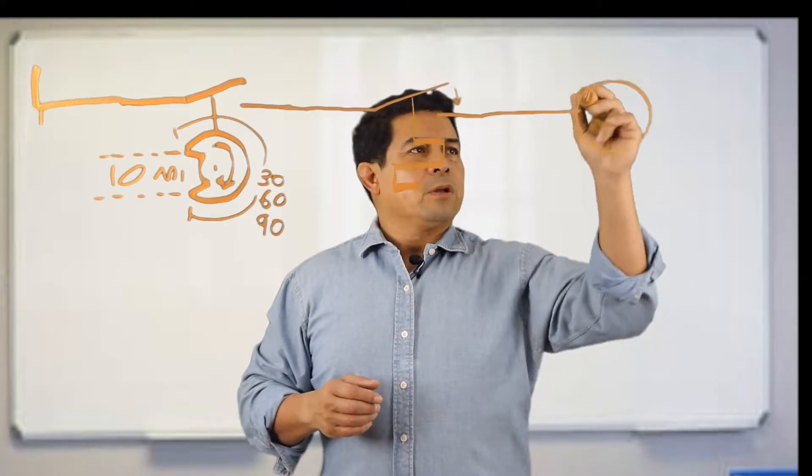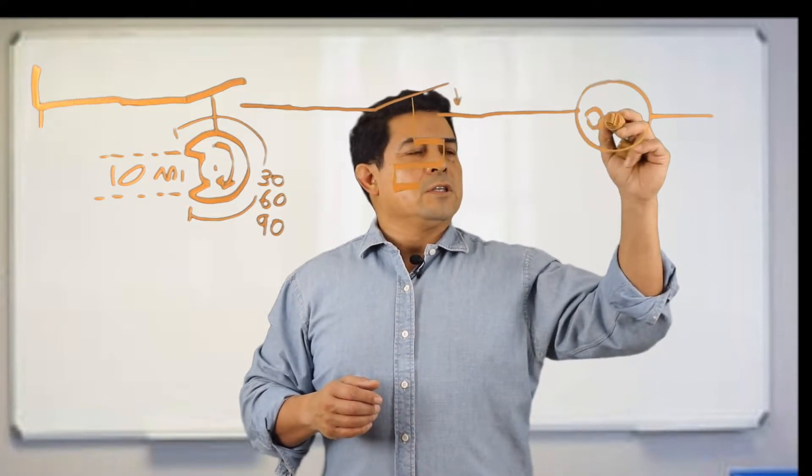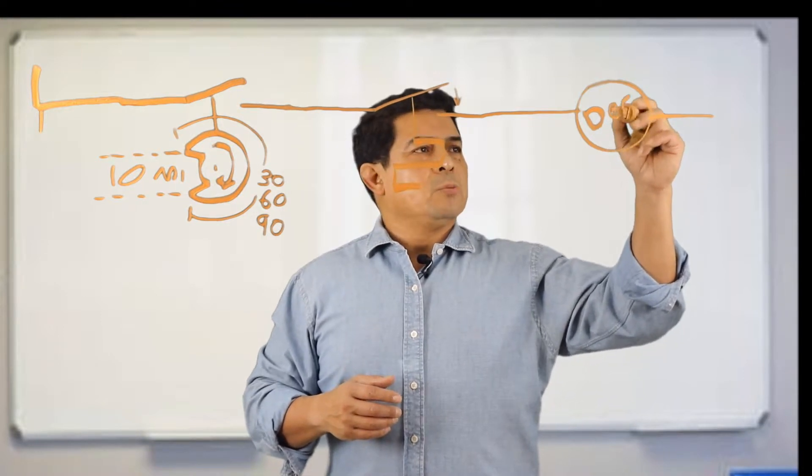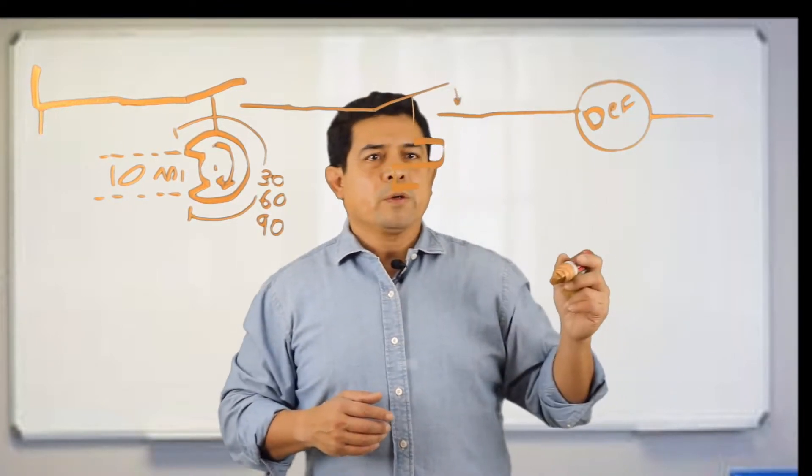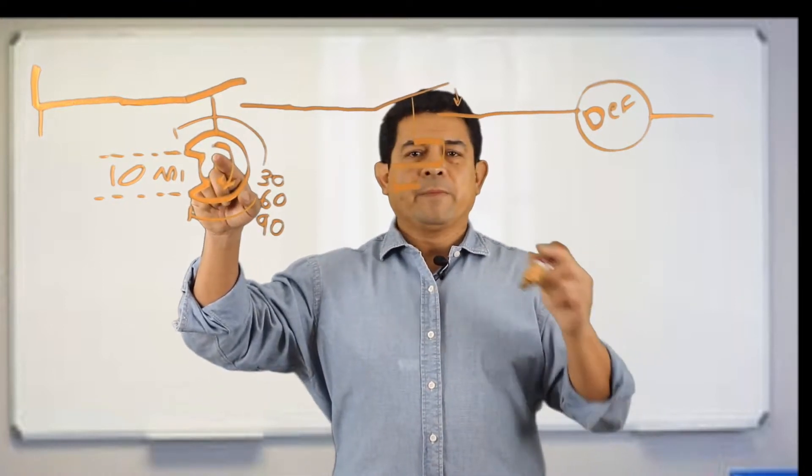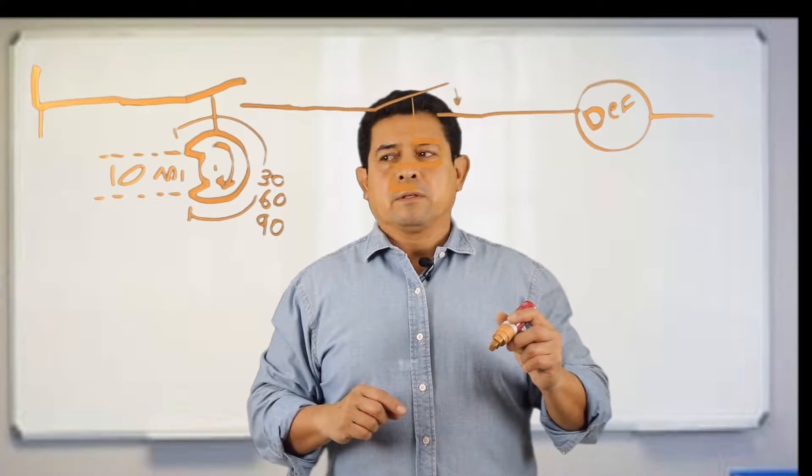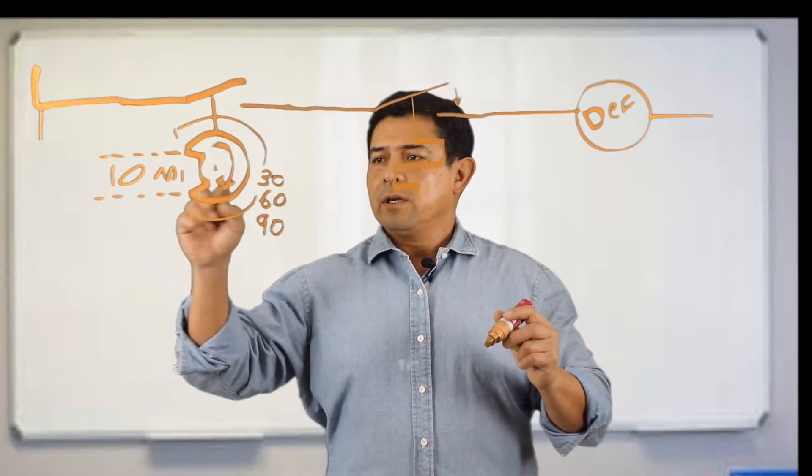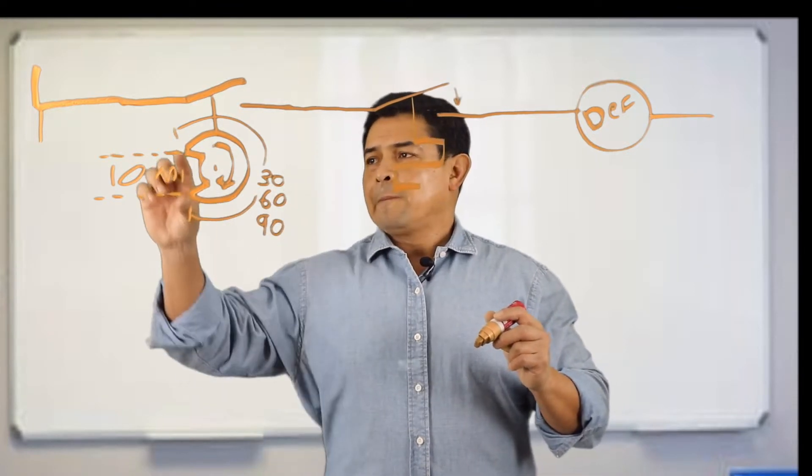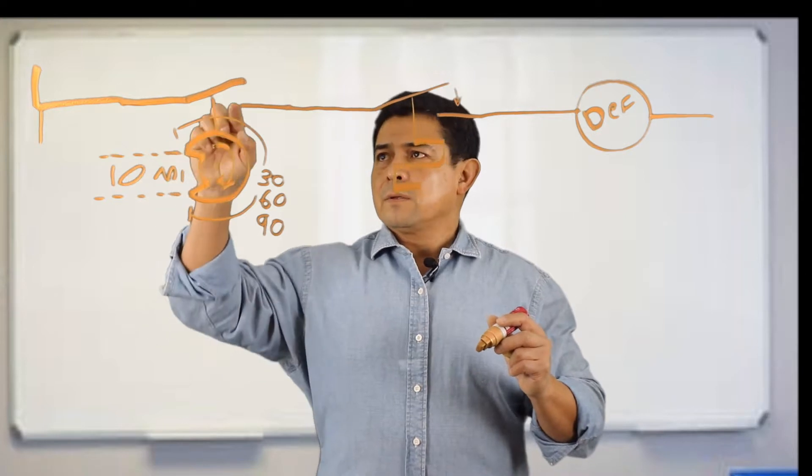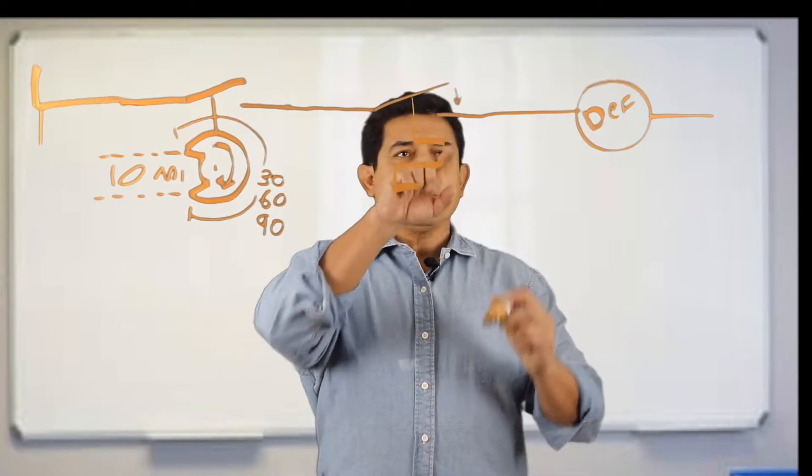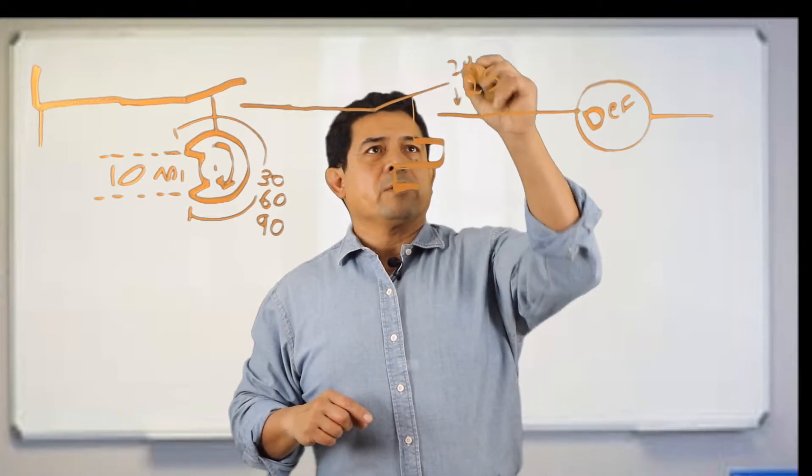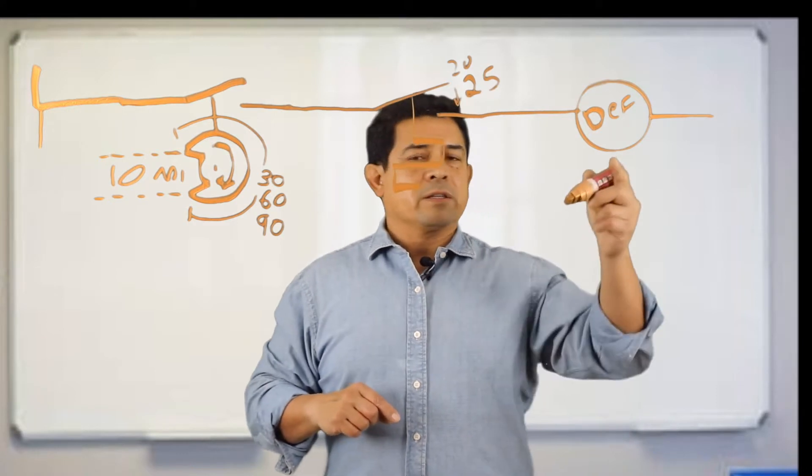This is going to go to your defrost relay or defrost controls. So for it to go into defrost, it's going to be by time and temperature. For this to go all the way around is going to be 30, 60, or 90 minutes. This is the 10 minute time period, so this will be closed for 10 minutes. Once the temperature drops down to 20 or 25, that's going to close, then it's going to go into defrost.